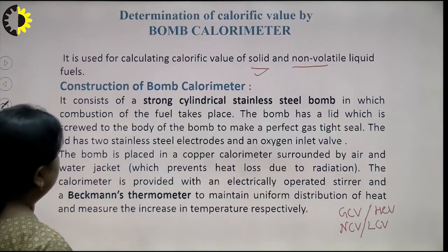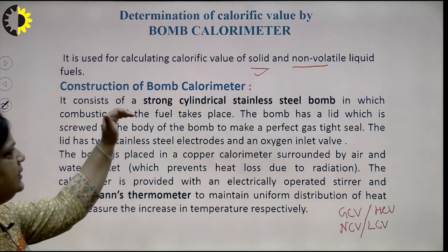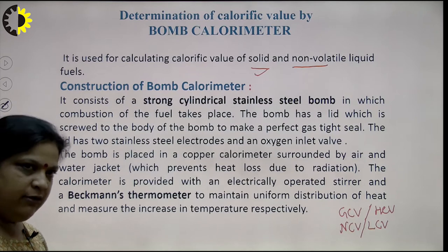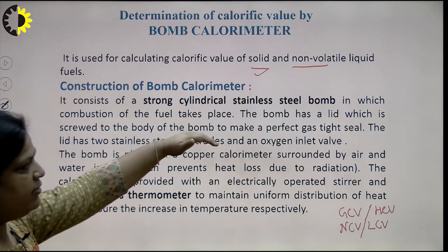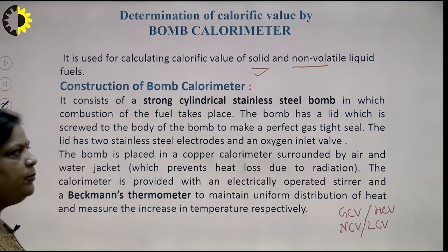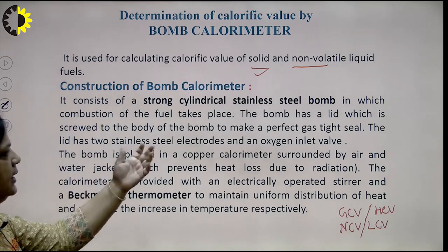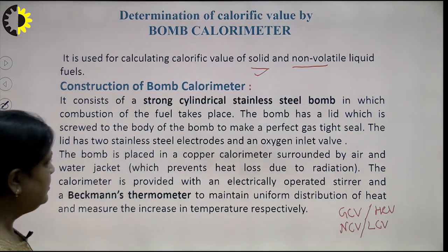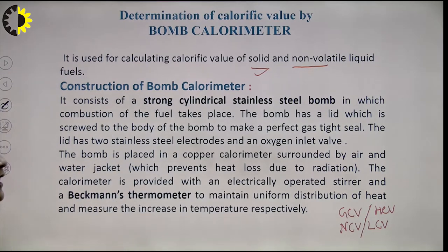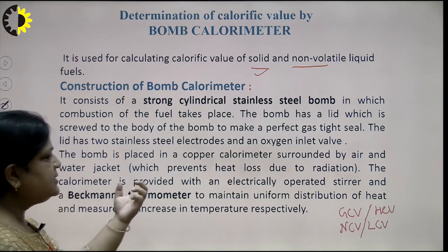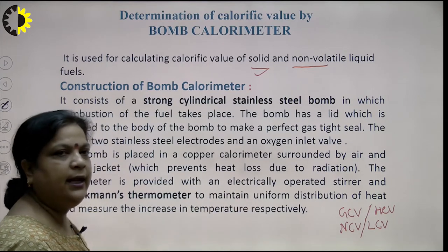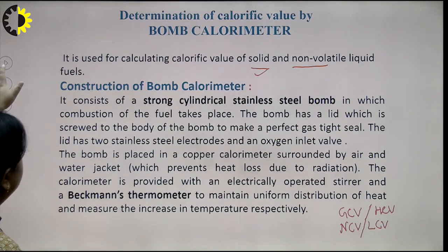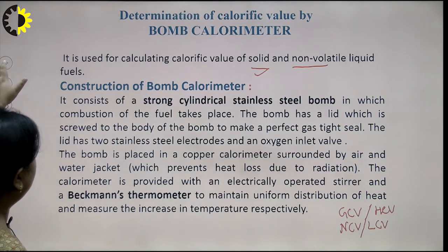The bomb calorimeter consists of a strong cylindrical stainless steel bomb in which combustion of fuel takes place. The fuel is kept in a crucible. The bomb is covered with a lead lid screwed to the body to make a perfect gas-tight seal. There are two stainless steel electrodes and one oxygen inlet valve. At one electrode there is a crucible stand. The bomb is placed in a copper calorimeter surrounded by air and water jacket, and is provided with an electrically operated stirrer and Beckman thermometer to measure temperature change up to 1/100 of a degree.